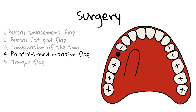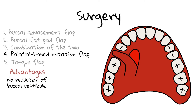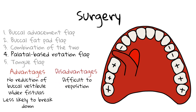A palatal based rotation flap involves raising a palatal flap, ensuring inclusion of the greater palatine artery for adequate blood supply. The flap is then rotated over the OAC and sutured. The exposed palatal bone can be covered with a pack held in place via sutures. The main advantage is that it does not reduce buccal vestibule depth, so it can be used if the patient wears dentures. It can also be used for wider fistulas and is less likely to break down compared to a buccal flap due to the thickness of palatal mucosa and the inclusion of the greater palatine artery. The disadvantages are that it is more difficult to reposition and can only be used in the premolar region.